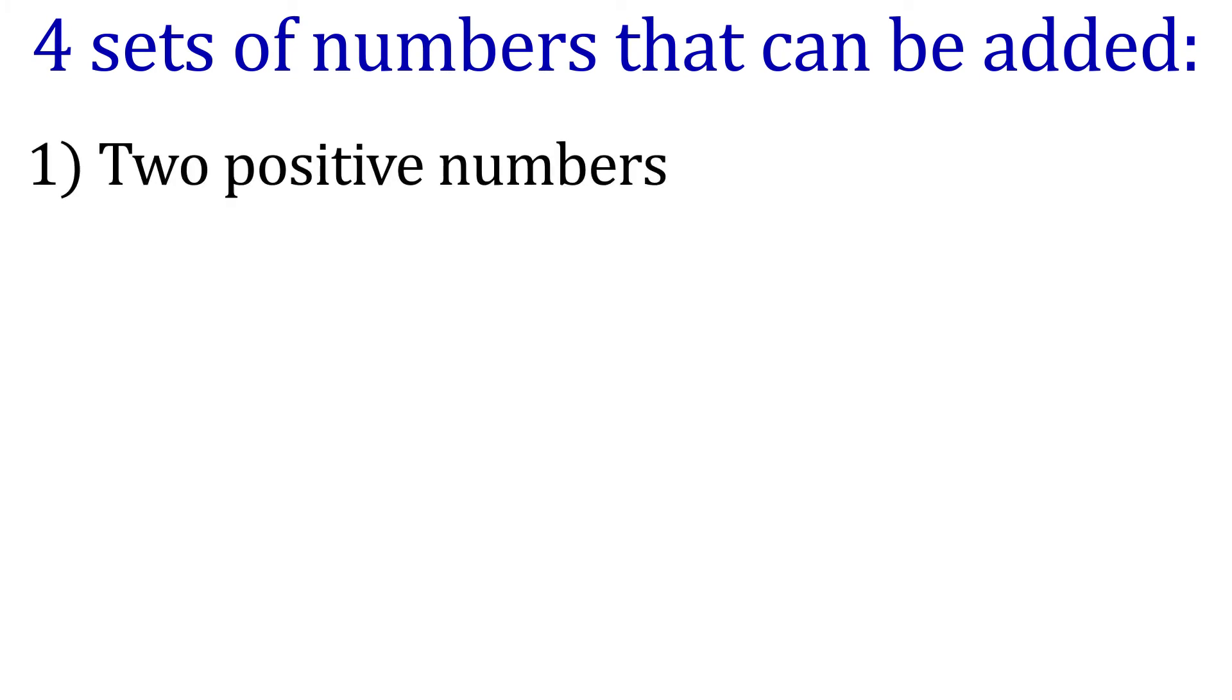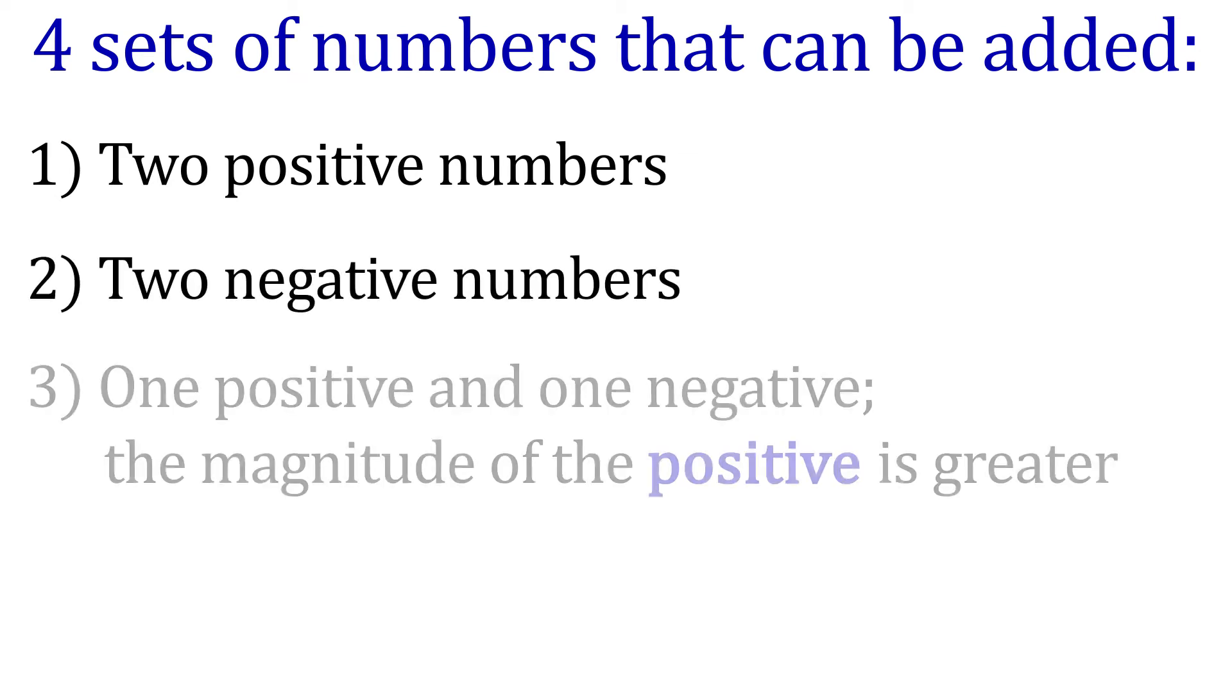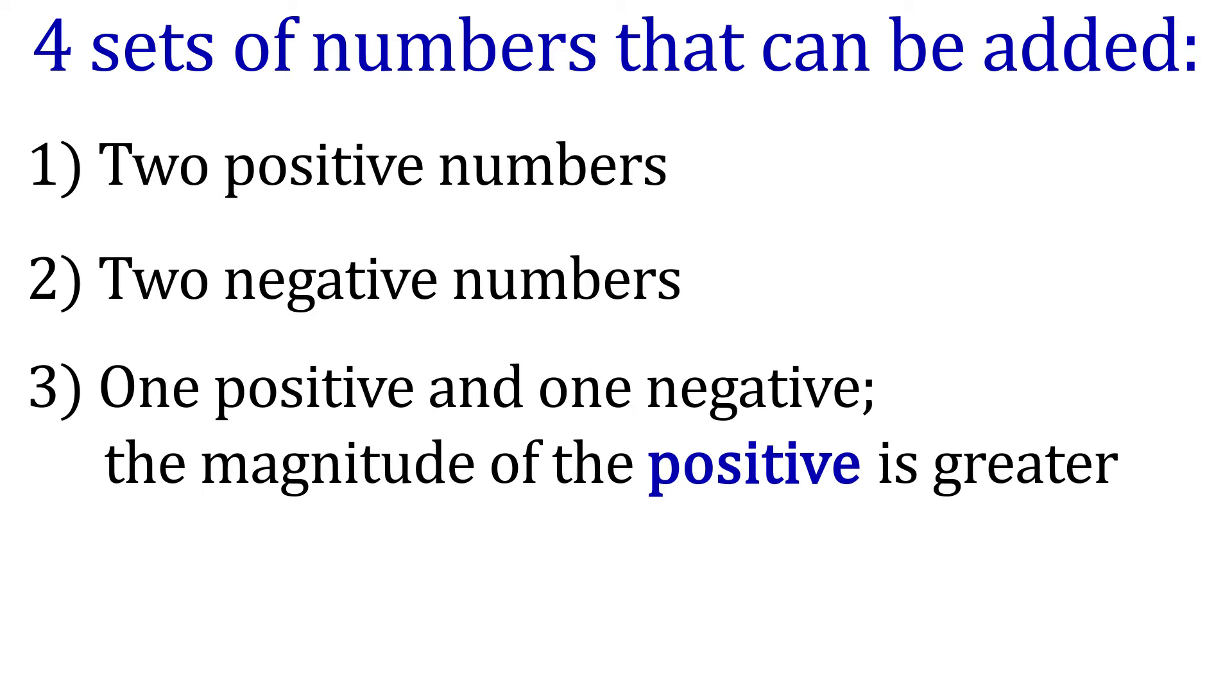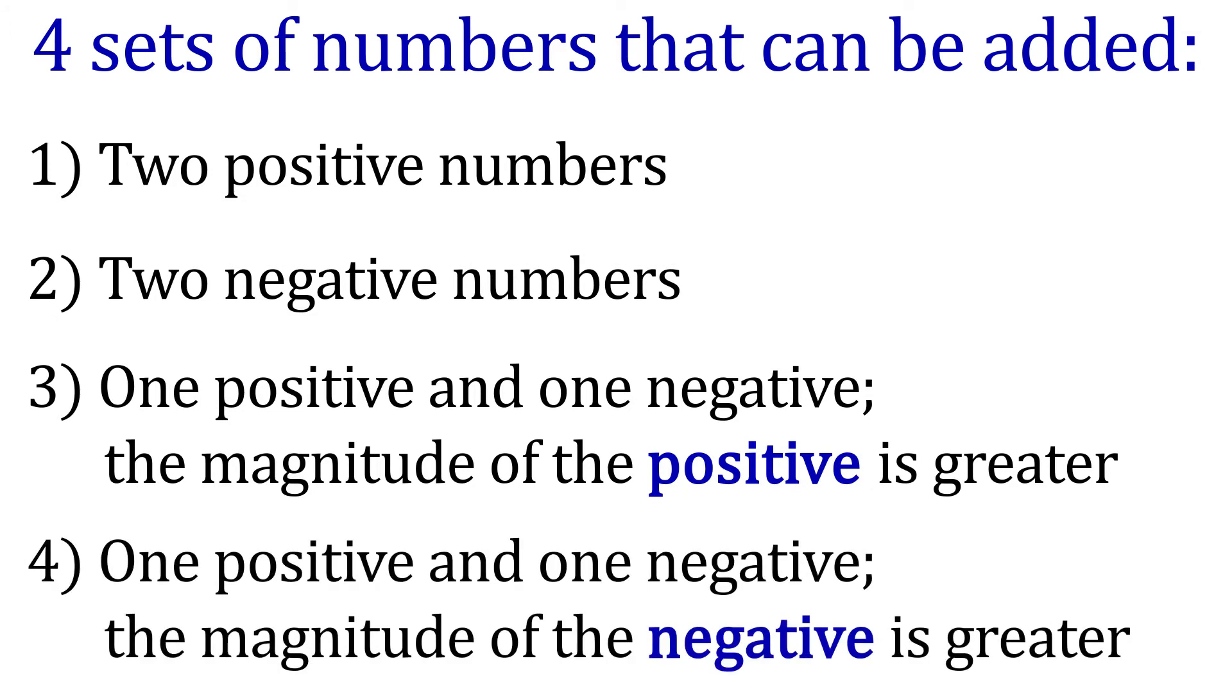And there are basically four sets of numbers that can be added. Number one, we can add two positive numbers. Number two, we can add two negative numbers. Number three, we can add one positive and one negative, where the magnitude of the positive is greater. And number four, we can add one positive and one negative, where the magnitude of the negative number is greater. And we're going to do an example of each, so we can see how the result turns out to be the correct answer. There's only one situation where we will get the incorrect answer, and it only applies to adding two positive or two negative numbers. So let's look at those first.